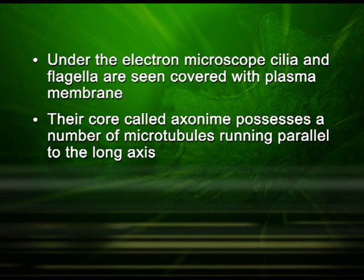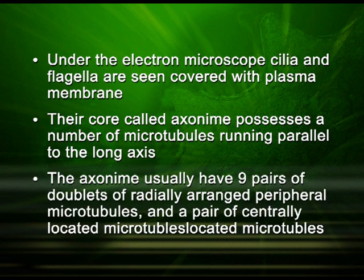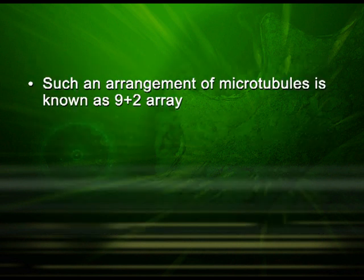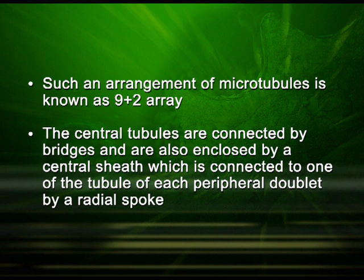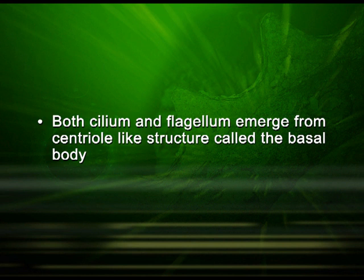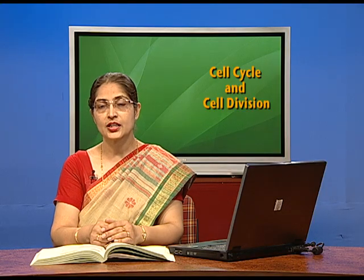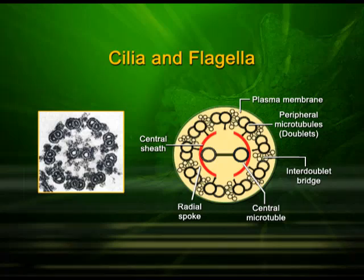Their core, called the axoneme, possesses a number of microtubules running parallel to the long axis. The axoneme usually has 9 pairs of doublets of radially arranged peripheral microtubules and a pair of centrally located microtubules — an arrangement known as the 9+2 array. The central tubules are connected by bridges and enclosed by a central sheath, connected to one tubule of each peripheral doublet by a radial spoke. Both the cilium and flagellum emerge from centriole-like structures called basal bodies.